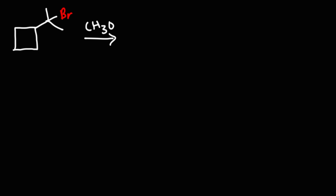Now let's work on another example problem. This time we're going to have a four-carbon ring with a bromine atom, and we'll use methanol as the solvent. Go ahead and try that problem.